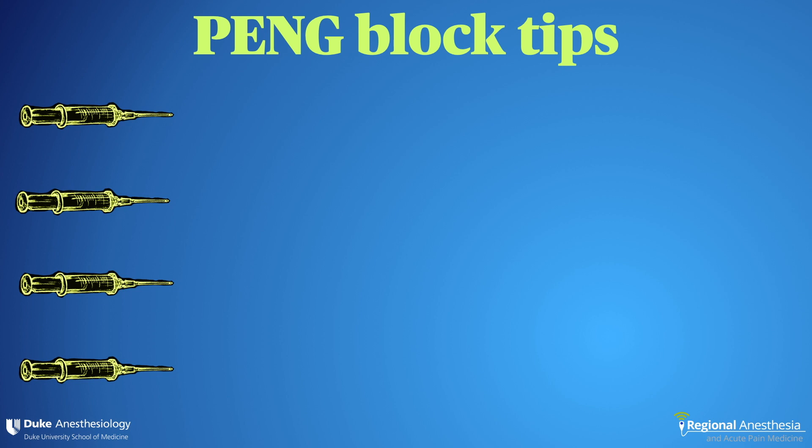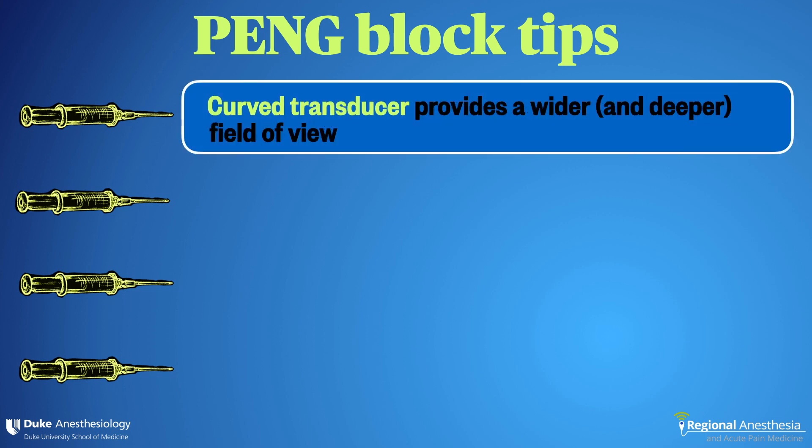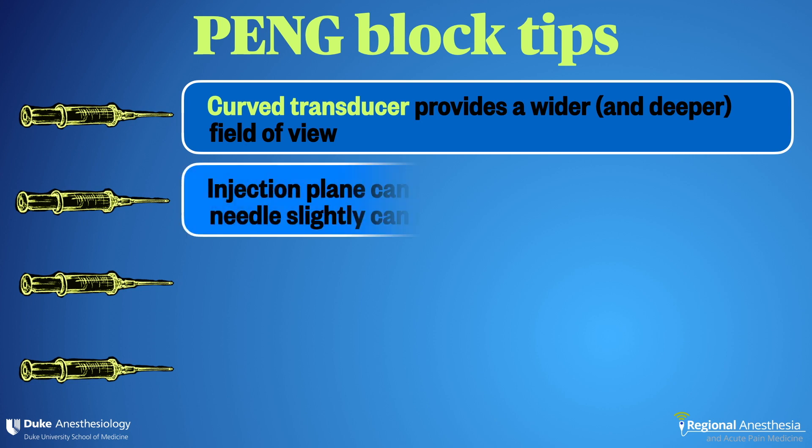Here are some PANG block tips. First, in many slim patients, a linear transducer is sufficient to visualize the sonoanatomy. However, a curved transducer is preferable as it allows for a wider field of view, including the AIIS, the IPE, and the femoral vessels and nerve.